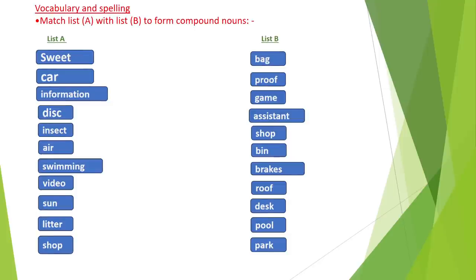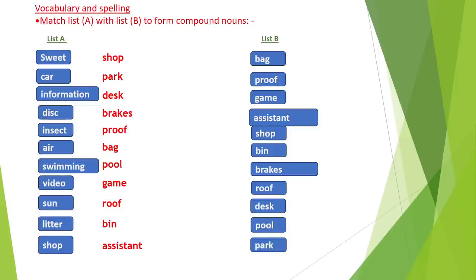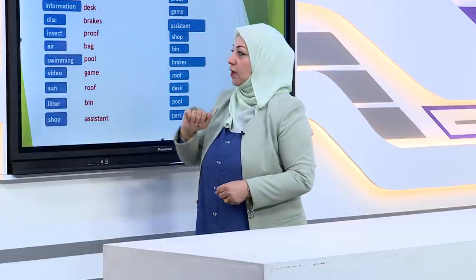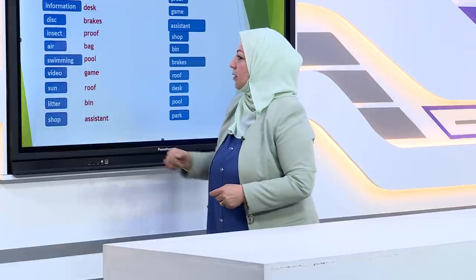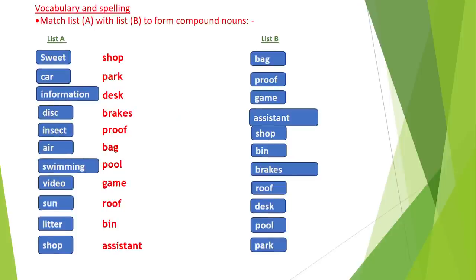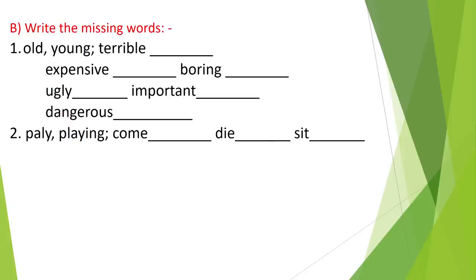Another kind of question is vocabulary and spelling. The first type: match list A with list B to form compound nouns. Sweet matches shop — sweet shop. Car matches park — car park. Information desk, disc brakes, insect proof, airbag, swimming pool, video game, sunroof, litter bin, and shop assistant.